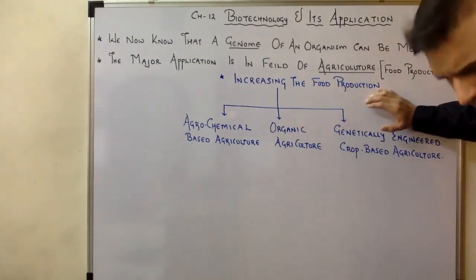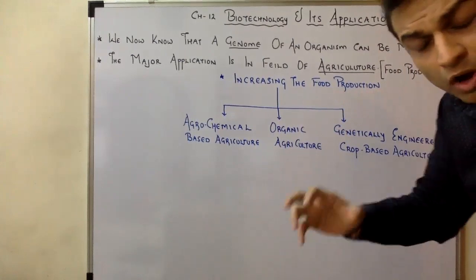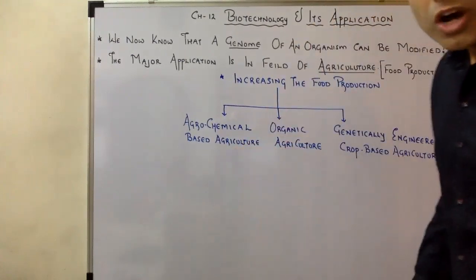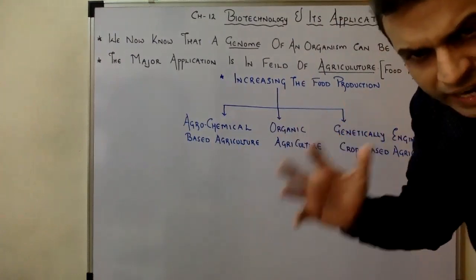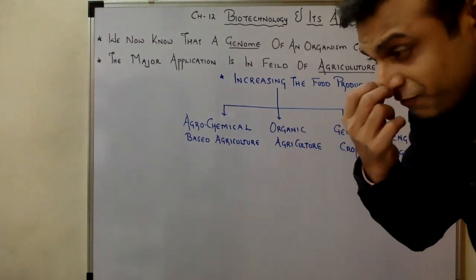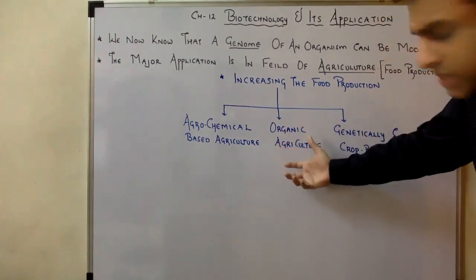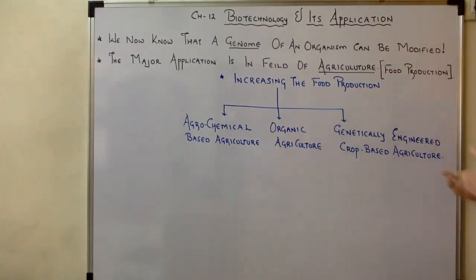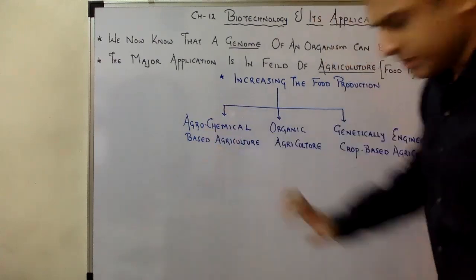The second approach is organic agriculture, which involves the use of green manure — when organisms die, we use them to make compost, and that organic manure is used in agriculture. The third and latest technique is genetically engineered crop-based agriculture. In India, which is still a developing country, farmers face great difficulty in acquiring fertilizers, and these fertilizers are also quite expensive, making agrochemical-based agriculture a challenge.